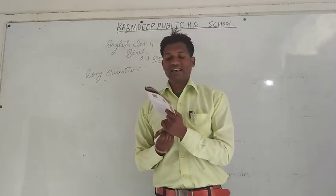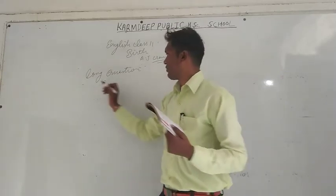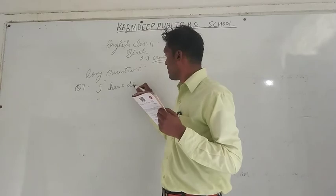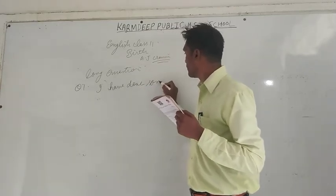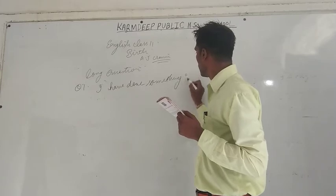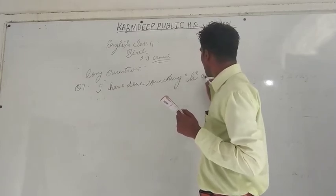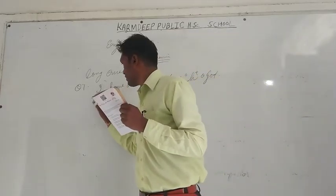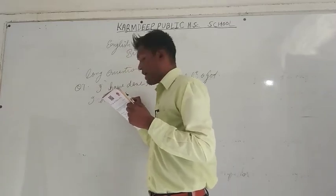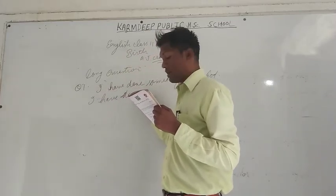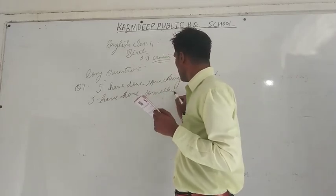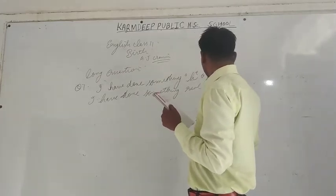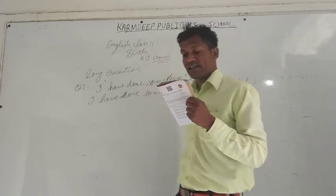Now we will jump to our back exercise. Take out page number 70. Question number one. The quote is: 'I have done nothing... I have done something... Oh God, I have something real at last.' What does Andrew say this for?